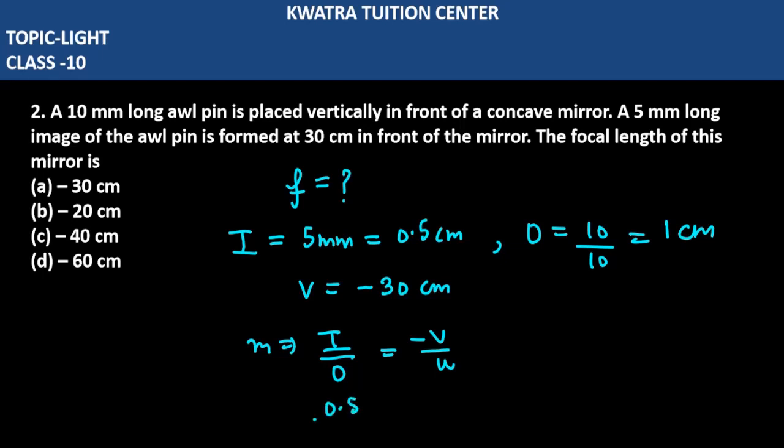So it is image over object, which equals minus V over U. Image is 0.5, object is 1, and V is minus 30. Then U will be unknown. We have to find the value of U in this case. Cross multiplication, and you will get minus 30 over 0.5.